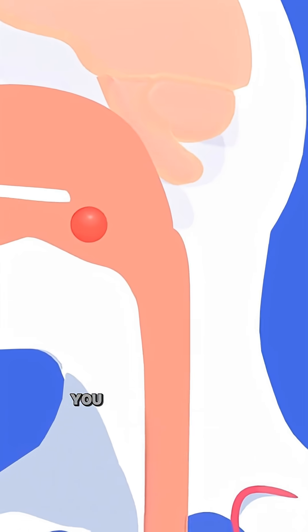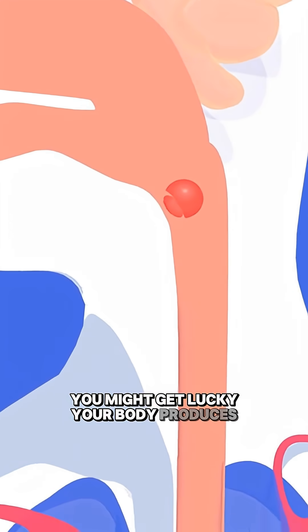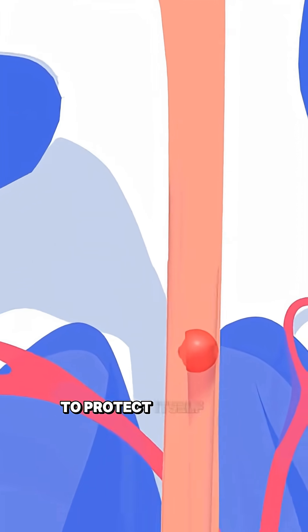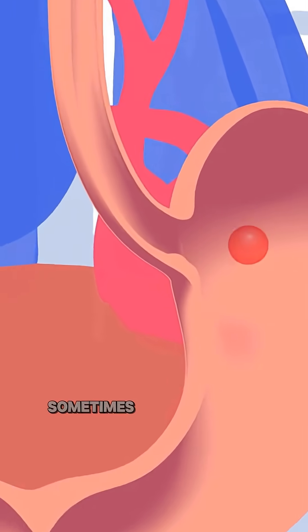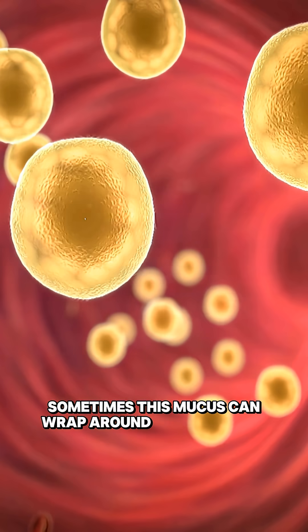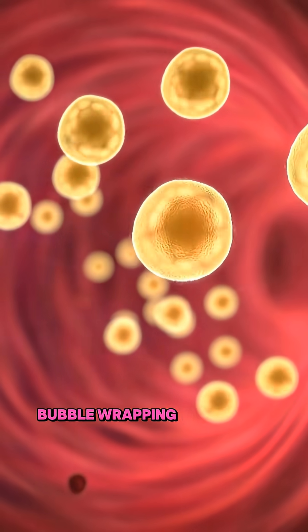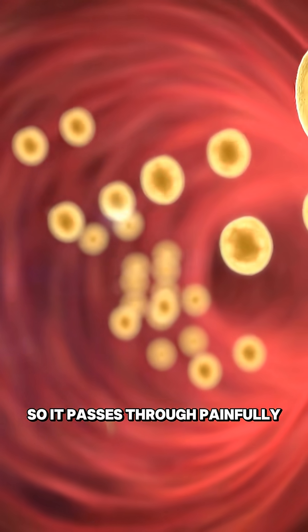If it reaches the stomach, you might get lucky. Your body produces a thick mucus to protect itself from stomach acid. Sometimes, this mucus can wrap around small shards, bubble wrapping the danger so it passes through, painfully.